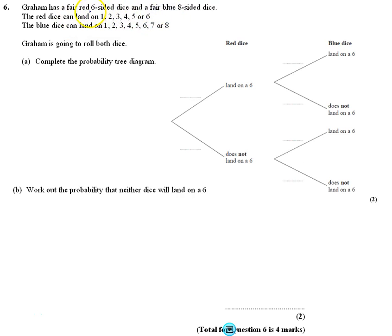We've got a red six-sided dice and a blue eight-sided dice. The red dice has one to six, and the blue dice has one to eight.